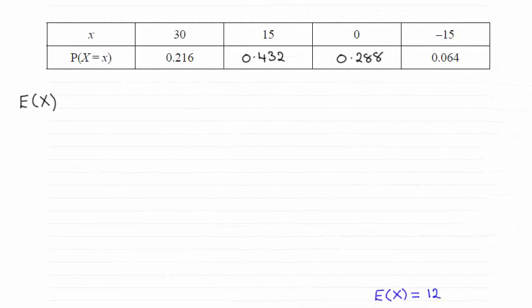Hi there. This is a very standard type of question where you're asked to find the expected value E of X for a probability distribution, and you can see that it turns out that it's equal to 12. But I'll take you through this slowly.